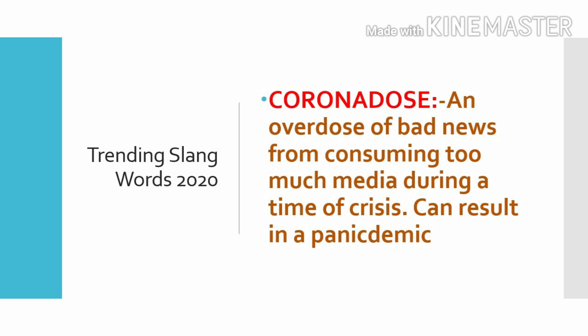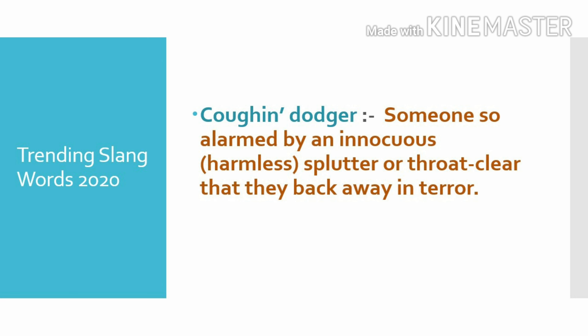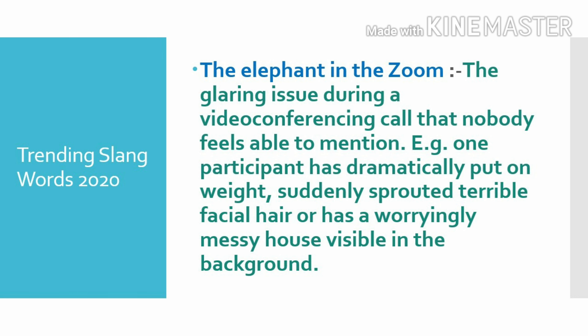Next slang word: coughing dodger — someone so alarmed by an innocuous cough or throat clear that they back away in terror. Next funny slang: the elephant in the zoo — the glaring issue during a video conferencing call that nobody feels able to mention, such as one participant having dramatically put on weight, sprouted terrible facial hair, or having a worryingly messy house visible in the background.